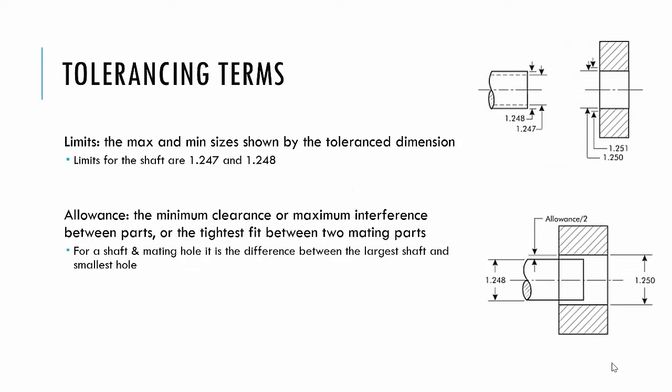Let's talk about limits. So the limits are the max and the min sizes. If you look at the picture on the right, you'll see on that shaft the limits on that shaft are 1.248 and 1.247. There are limits as well on the hole in that block, and you'll see that those are 1.250 and 1.251.